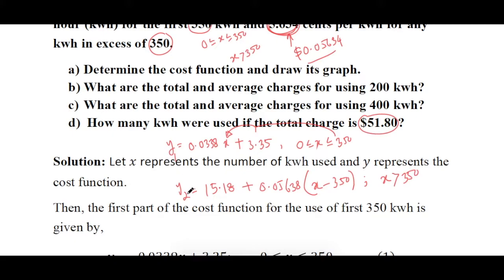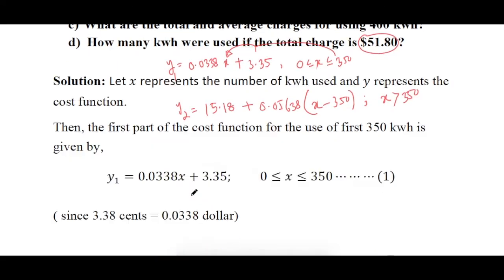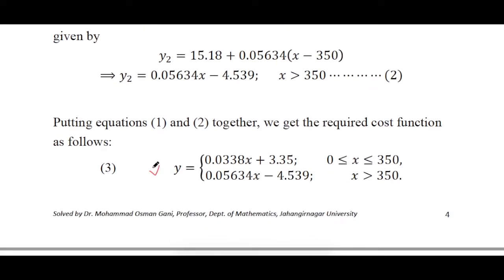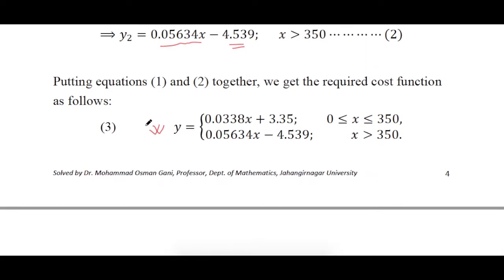Writing y1 and y2 together gives the required cost function. If you simplify y2, it becomes 0.05634x − 0.05634×350 + 15.18, which simplifies to the final expression. So your first function handles 0 to 350 and the second handles x > 350.